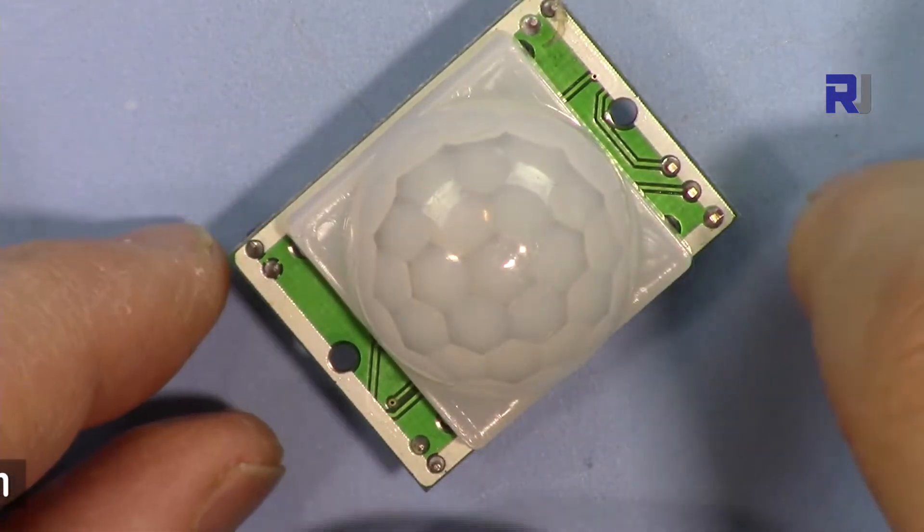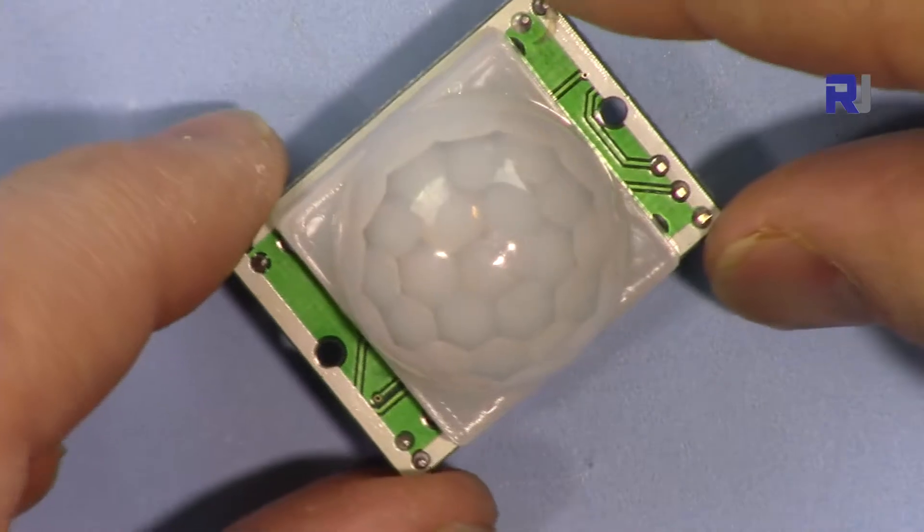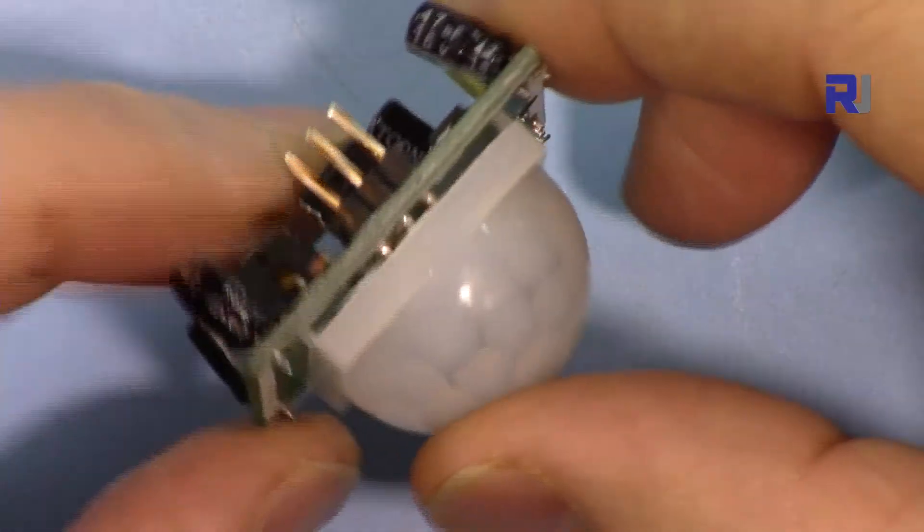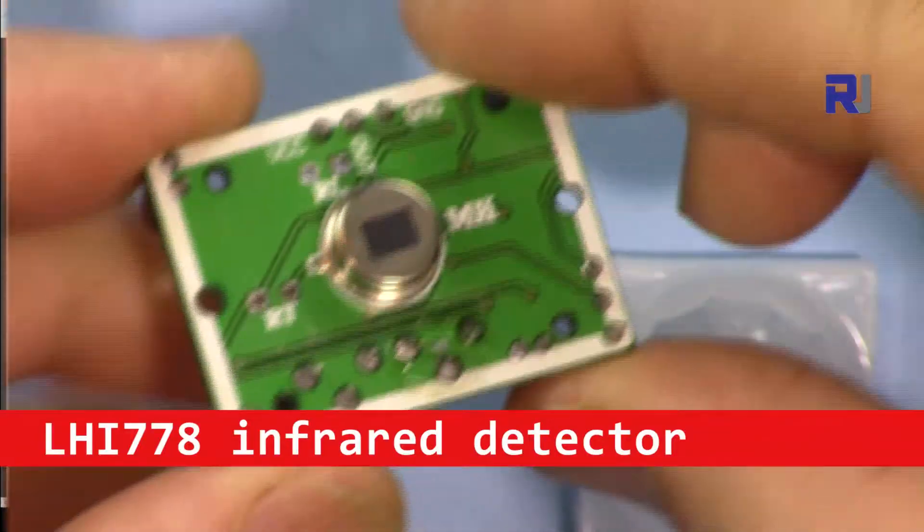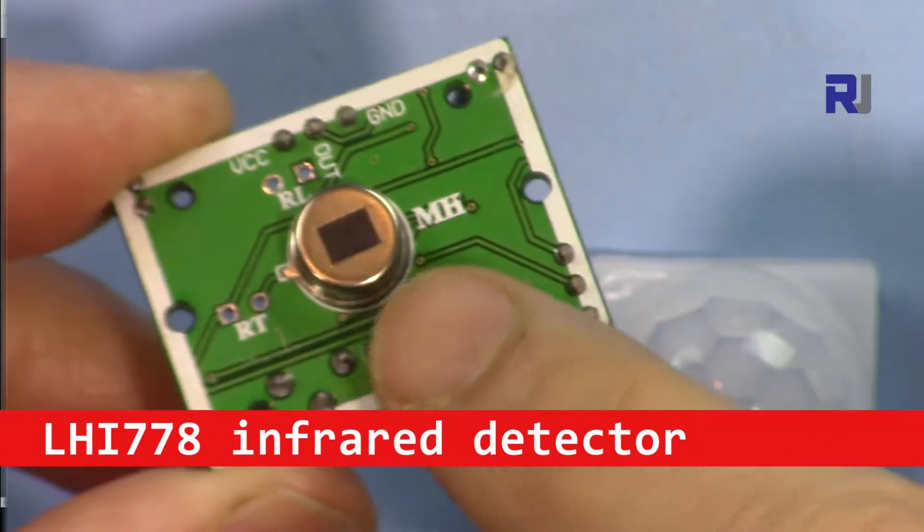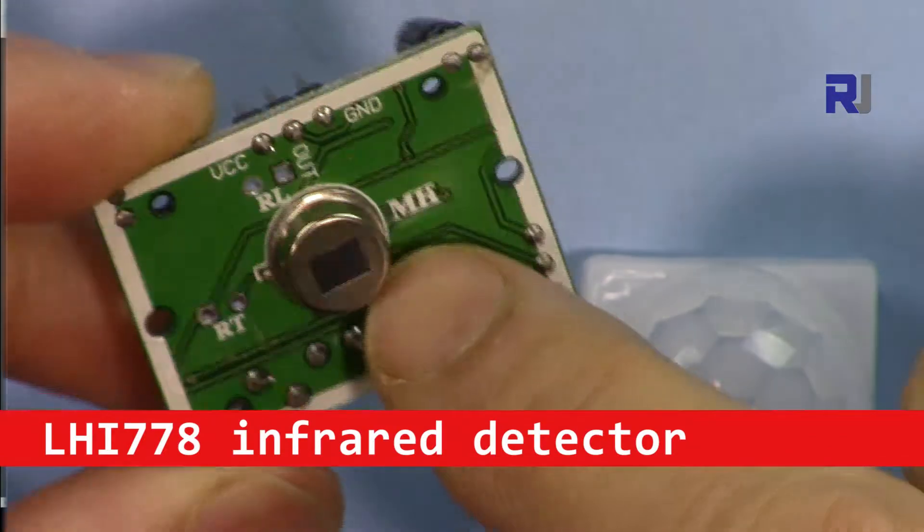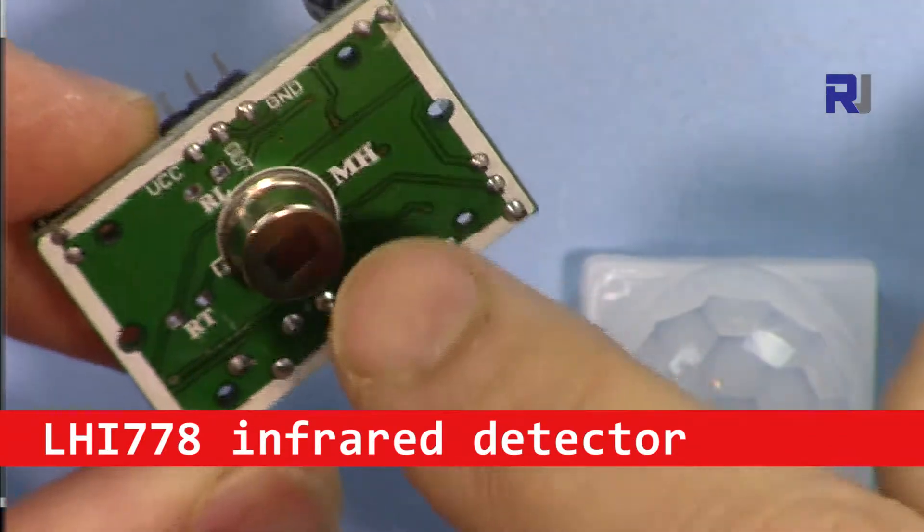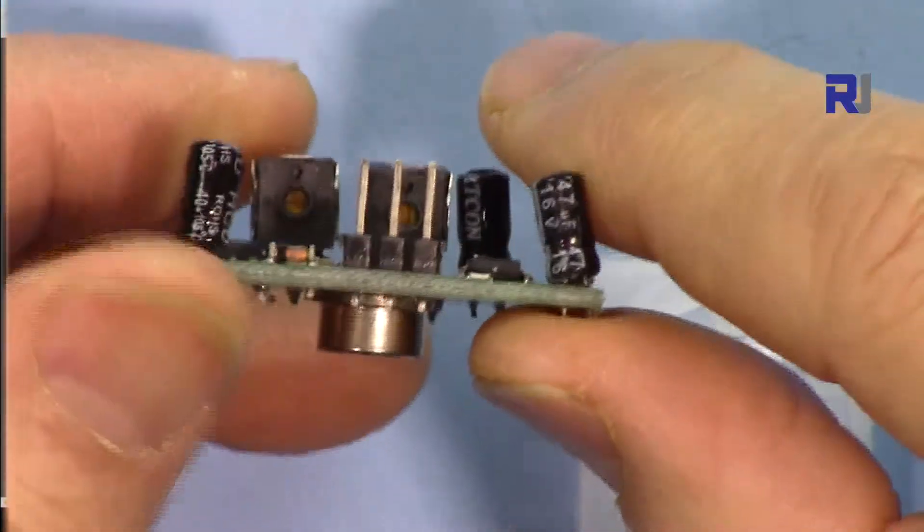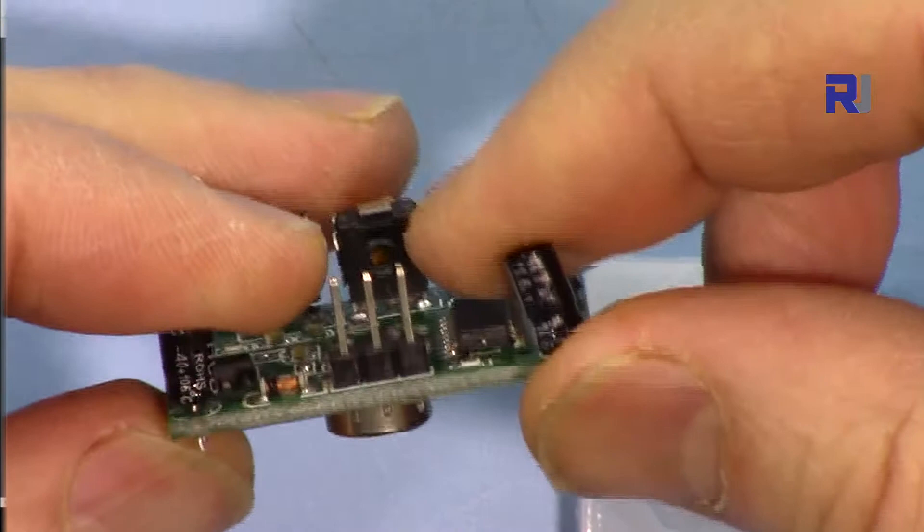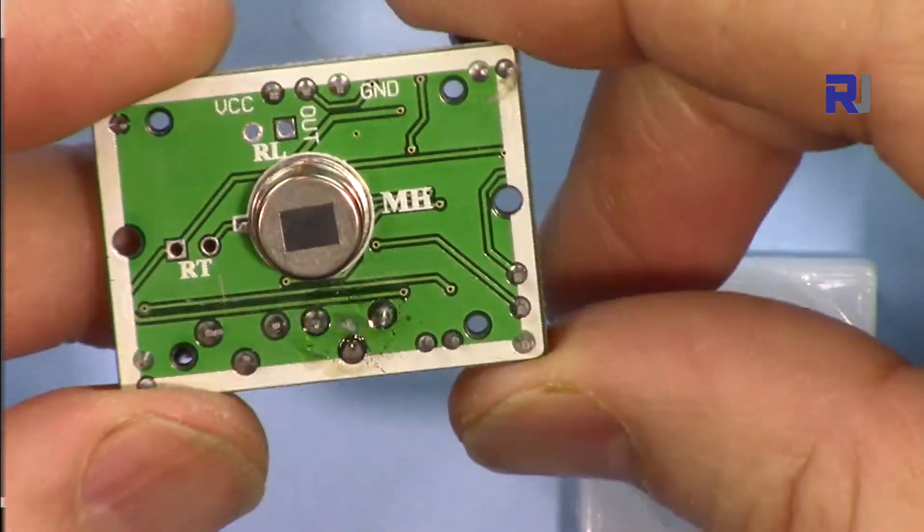It's 32 by 24 millimeters and it can work with 5 to 20 volts. Underneath of this, when I remove it, this is the actual module LHI778. This is the actual module that does the work, but they also put some circuitry to make it a module ready to be used by robotics applications.